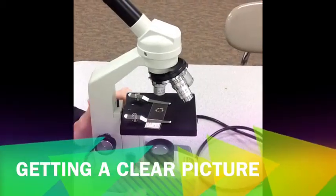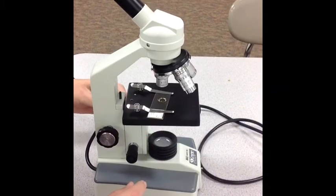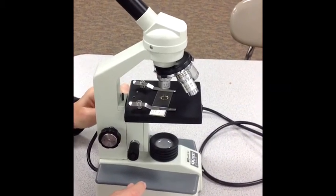When you get all this stuff set up, use the coarse adjustment knob to move the stage up closer to the objective lens.